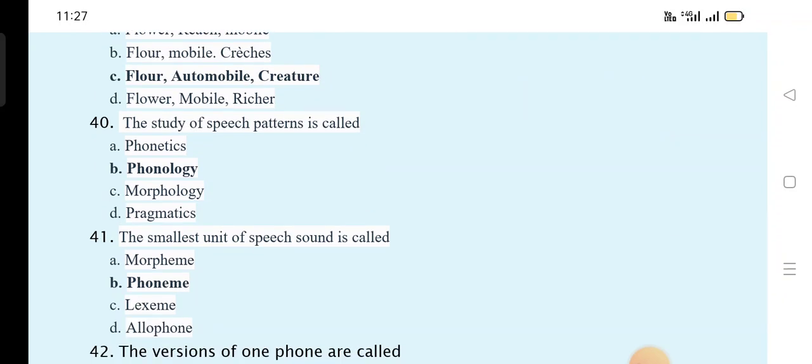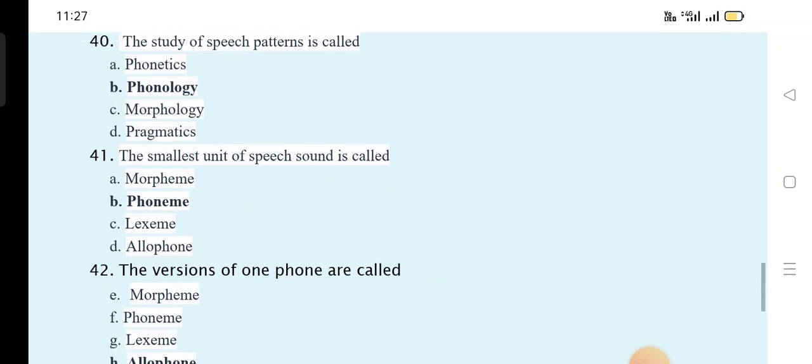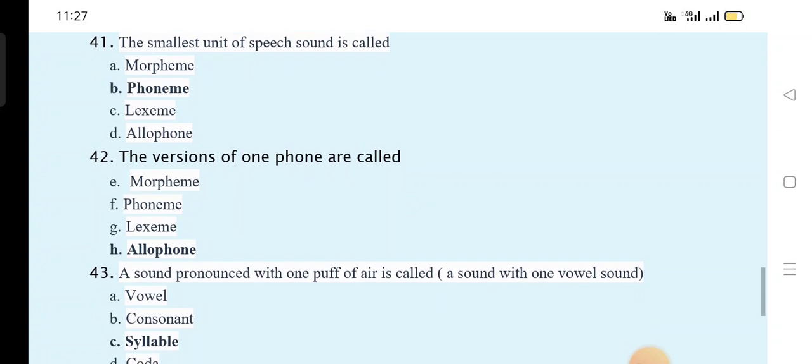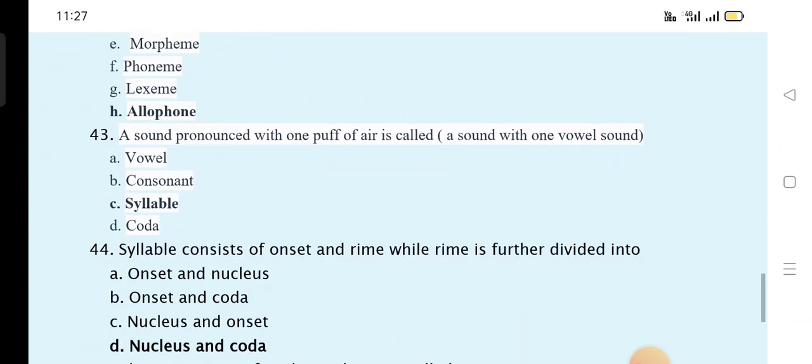The study of speech patterns is called phonology. The smallest unit of speech sound is called phoneme. The versions of the phoneme are called allophone. The sound pronounced with a puff of air is called aspirated. A sound with one vowel sound is a syllable.